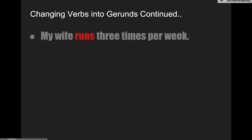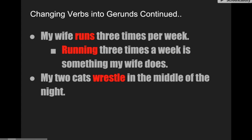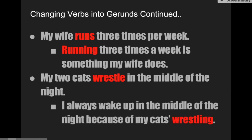A few more examples. 'My wife runs three times per week.' Change that to a gerund by adding 'ing': 'Running three times a week is something my wife does.' See how I have to relocate this verb with 'ing' at the end to the beginning of a sentence in order to make it act as a noun. 'My two cats wrestle in the middle of the night' becomes 'I always wake up in the middle of the night because of my cats' wrestling.' Wrestling there is at the end of the sentence — you can place the gerund at the beginning, the end, or even the middle sometimes, but you have to move it around to fit the rewrite of the sentence.